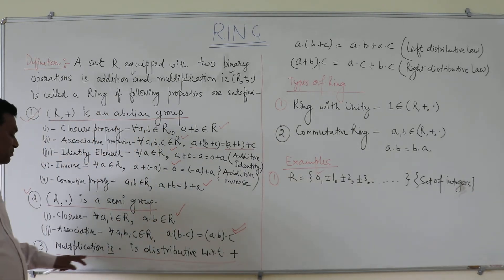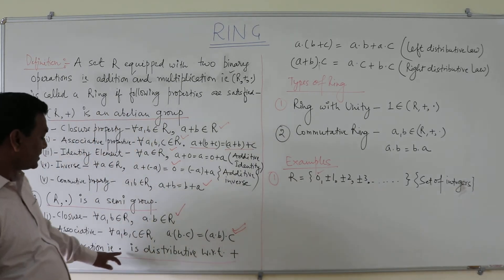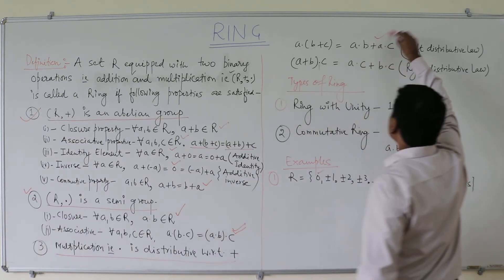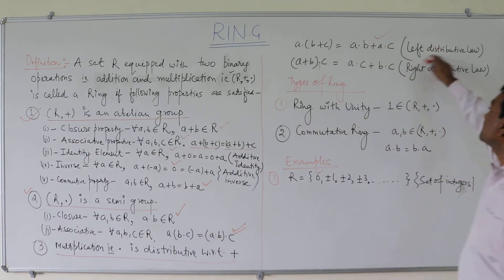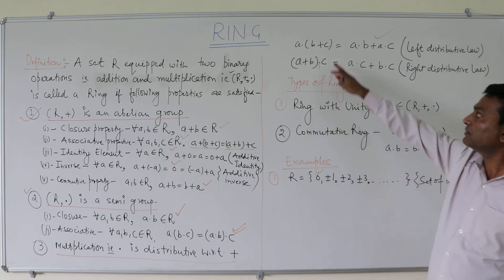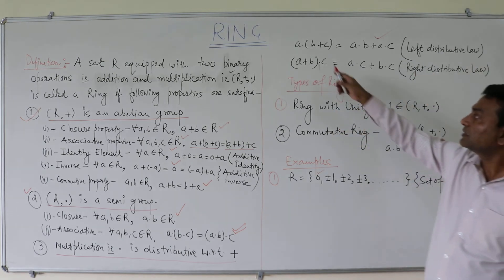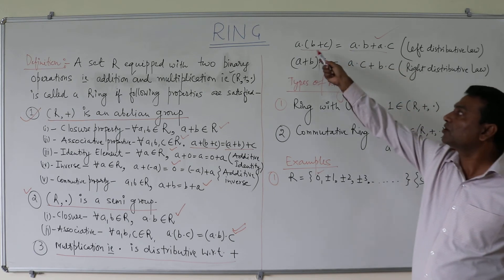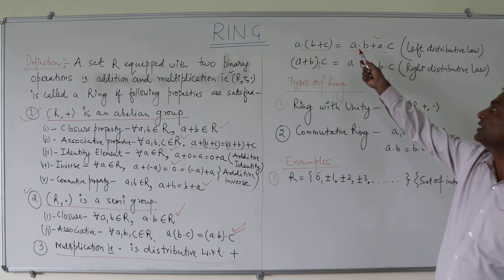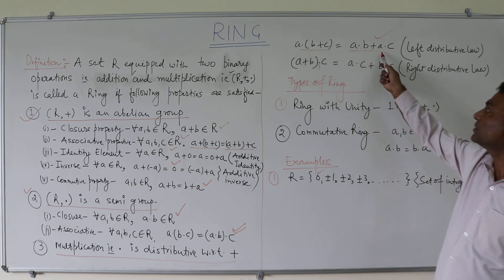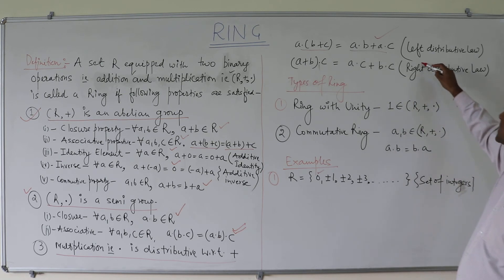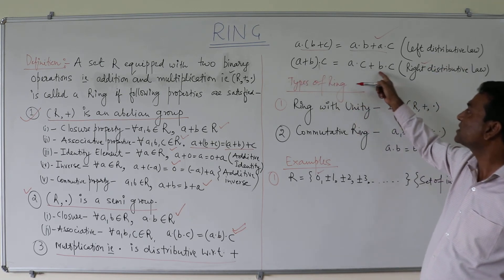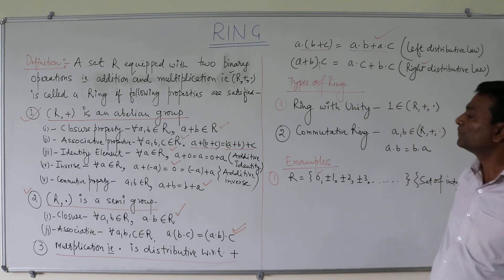The third property is that multiplication is distributive with respect to addition. For the left distributive law, if we take three elements, then a · (b + c) = a · b + a · c. And for the right distributive law, (a + b) · c = a · c + b · c. Both distributive laws hold.